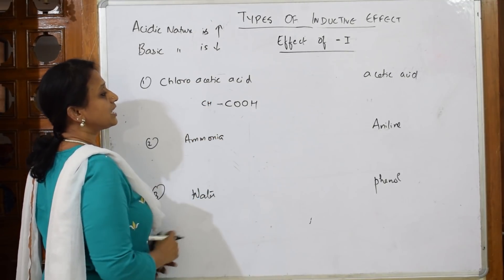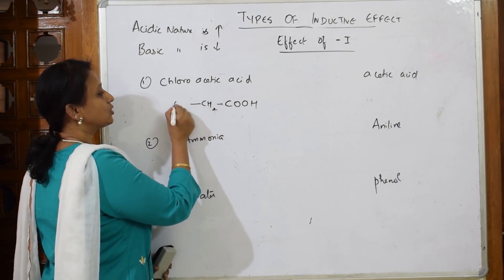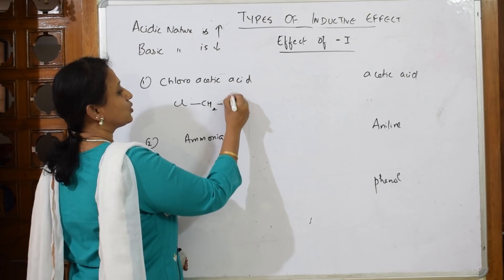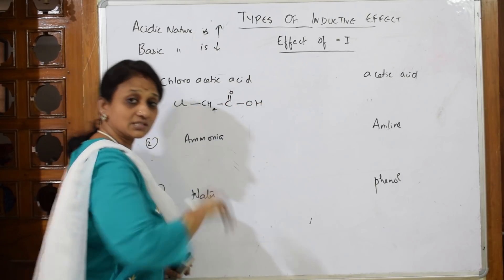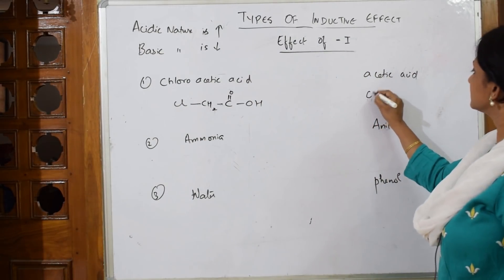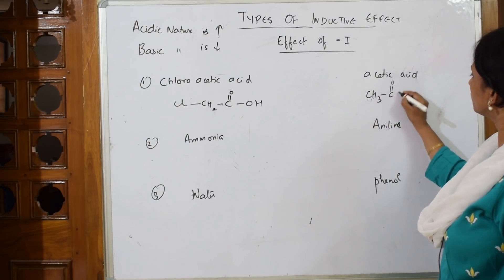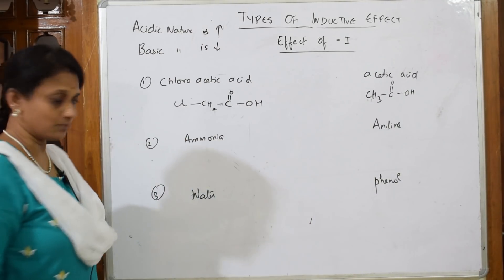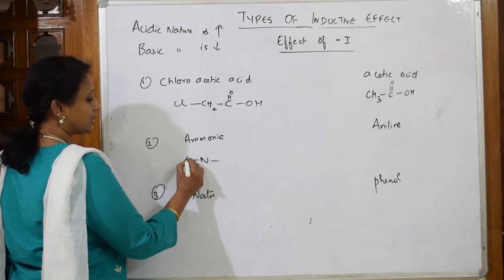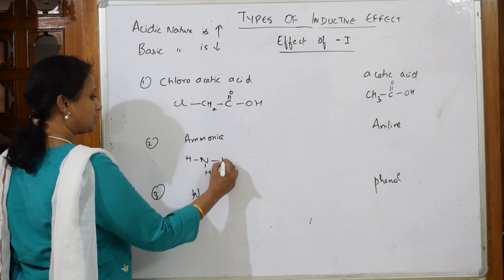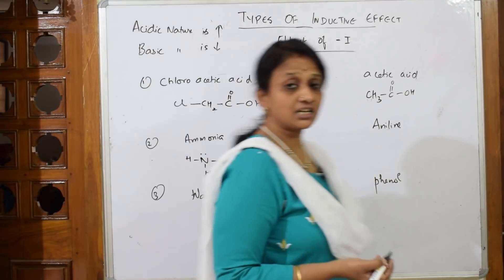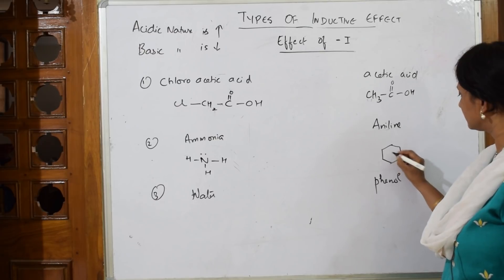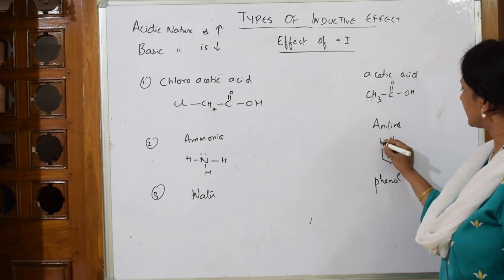In chloroacetic acid, one hydrogen on the CH3 group is removed and chlorine is added, giving Cl-CH2-COOH. Acetic acid is CH3-C(=O)-OH. The next examples are ammonia (NH3 with a lone pair of electrons) and aniline (a benzene ring with an NH2 group, where nitrogen also has a lone pair of electrons).